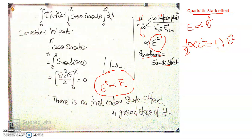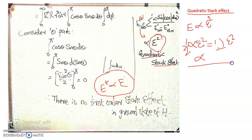So half of this constant times epsilon squared gives us that alpha divided by 2 equals this constant, or alpha equals 2 times this constant. This gives us a method of evaluating the polarizability of the hydrogen atom. As an assignment, you should be able to discuss the quadratic Stark effect and hence evaluate the atomic polarizability of the hydrogen atom, though it is not in our syllabus.